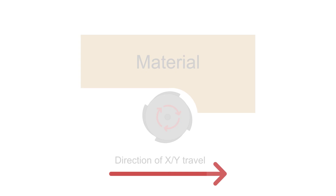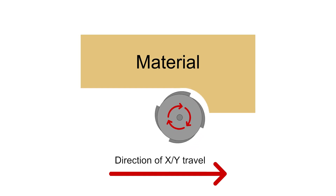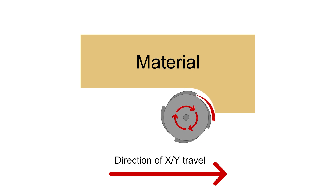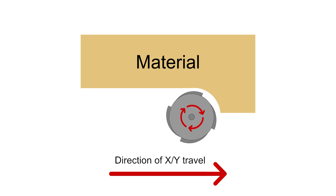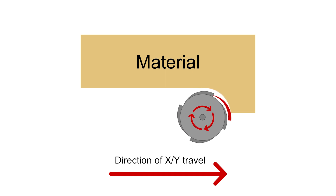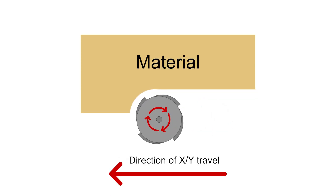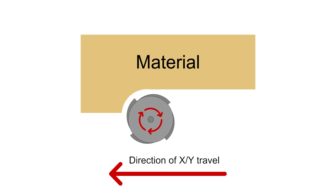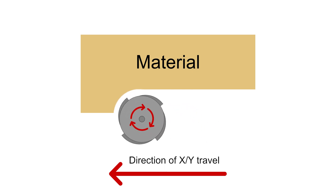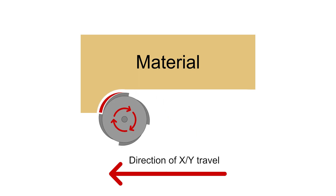Conventional milling: when the cutter is doing the deepest part of its cut, it is rotating against the direction of the XY travel and is cutting least efficiently. Note how the width of the chip starts from zero and increases as the cutter finishes slicing. Climb milling: when the cutter is doing the deepest part of its cut, it is rotating with the direction of the XY travel and is cutting most efficiently. Note how the width of the chip starts at maximum and decreases.